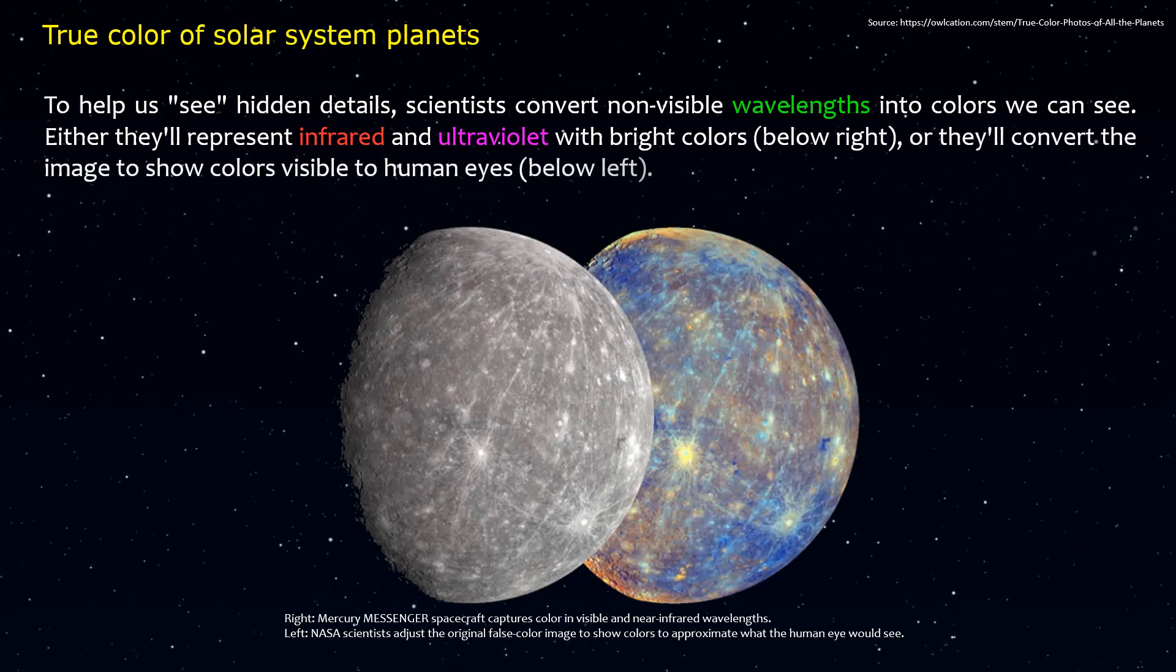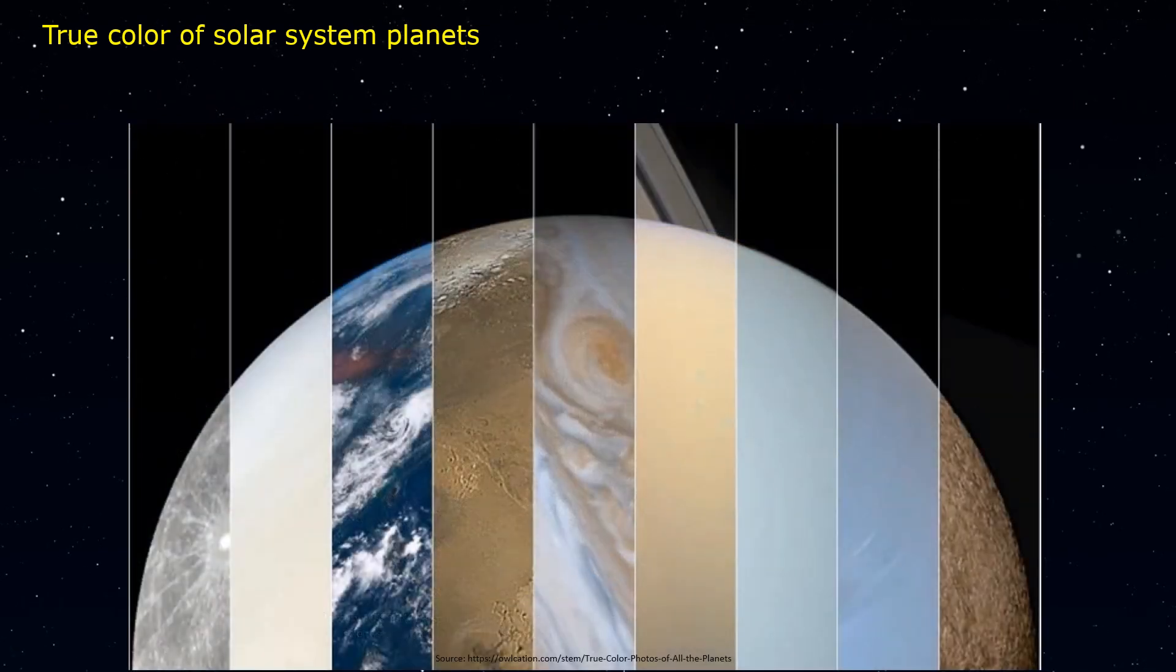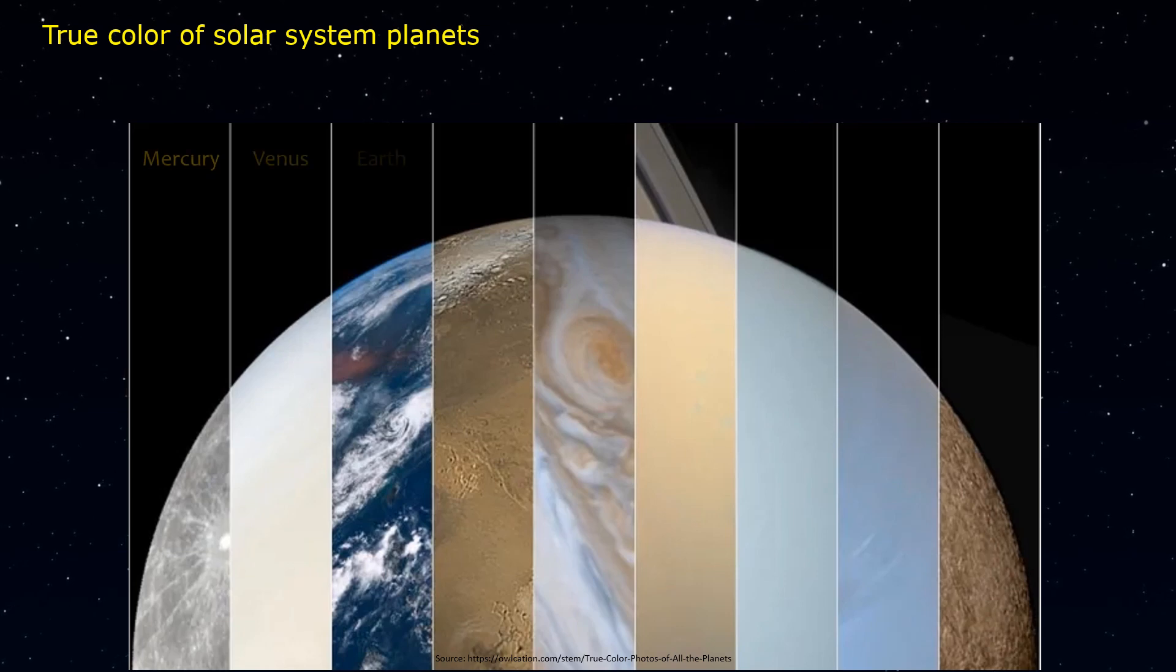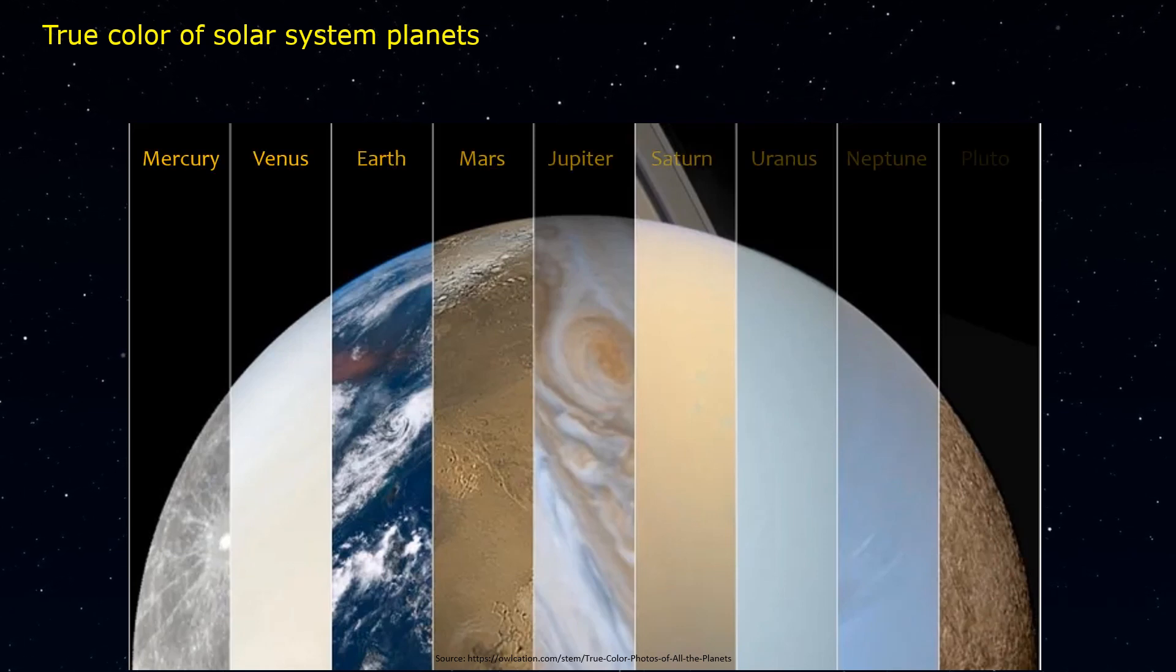True color of solar system planets: Mercury, Venus, Earth, Mars, Jupiter, Saturn, Uranus, Neptune, Pluto.